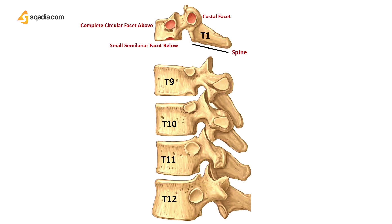T2 through T8 are the typical thoracic vertebrae. Moving on to the atypical varieties, the 9th thoracic vertebra has only one atypical feature — it lacks the inferior costal facets, or in some cases a small semi-lunar facet below is present. Only the superior costal demi-facets are found here.